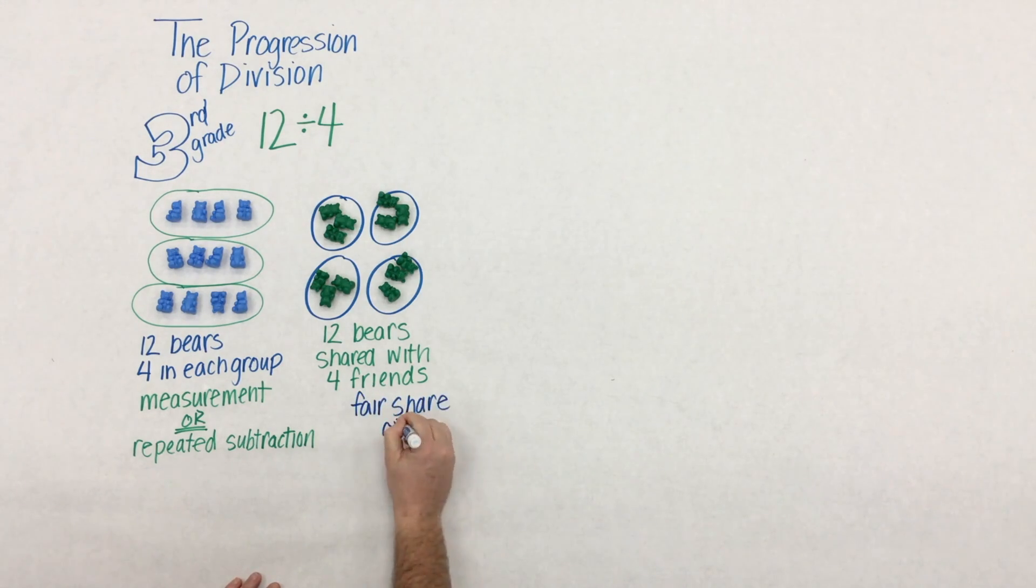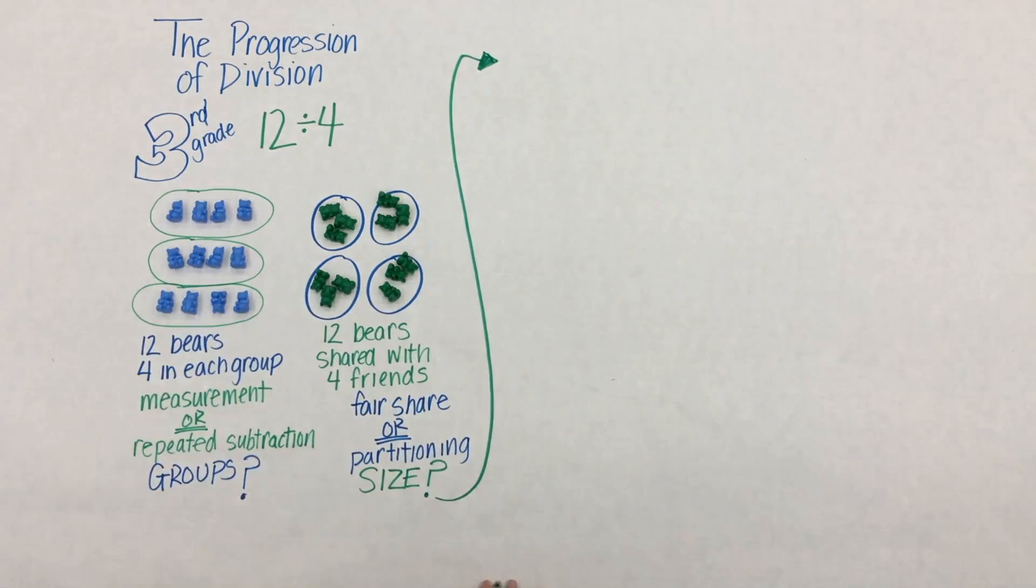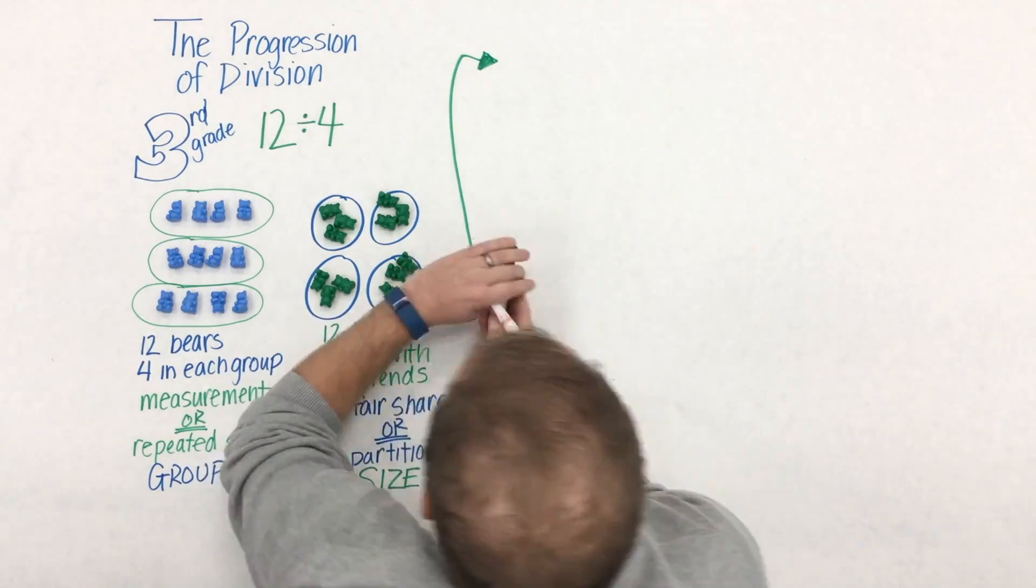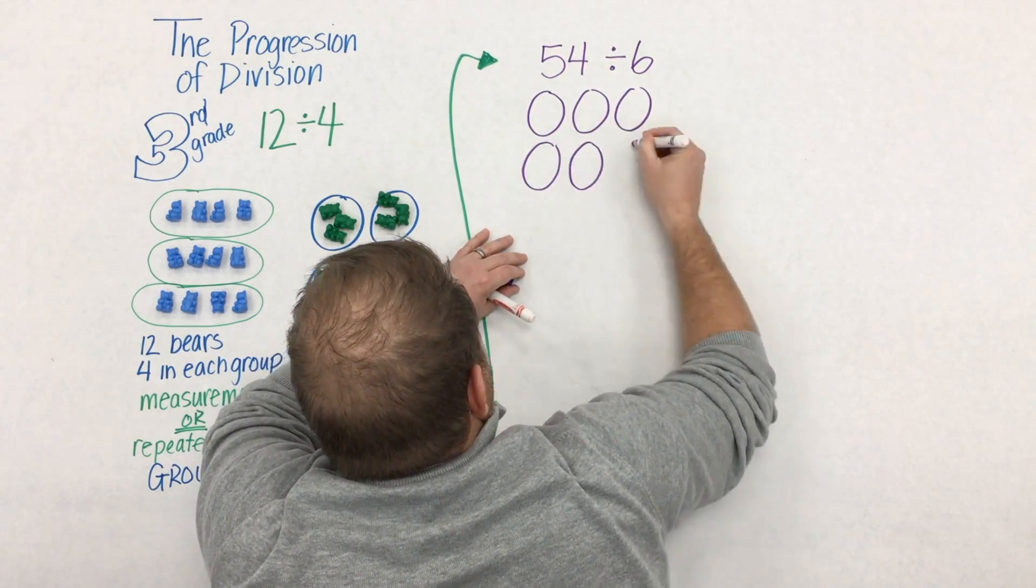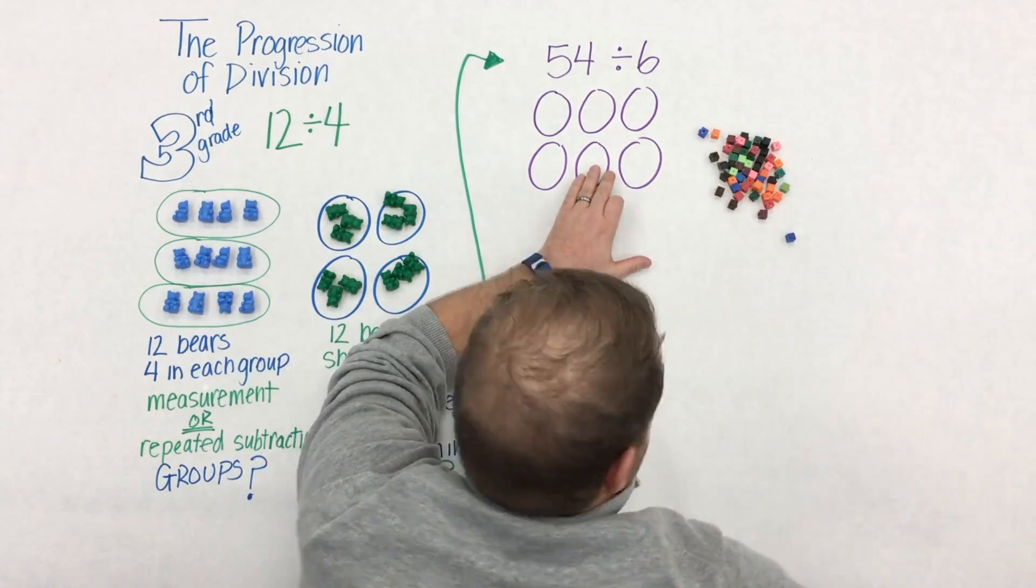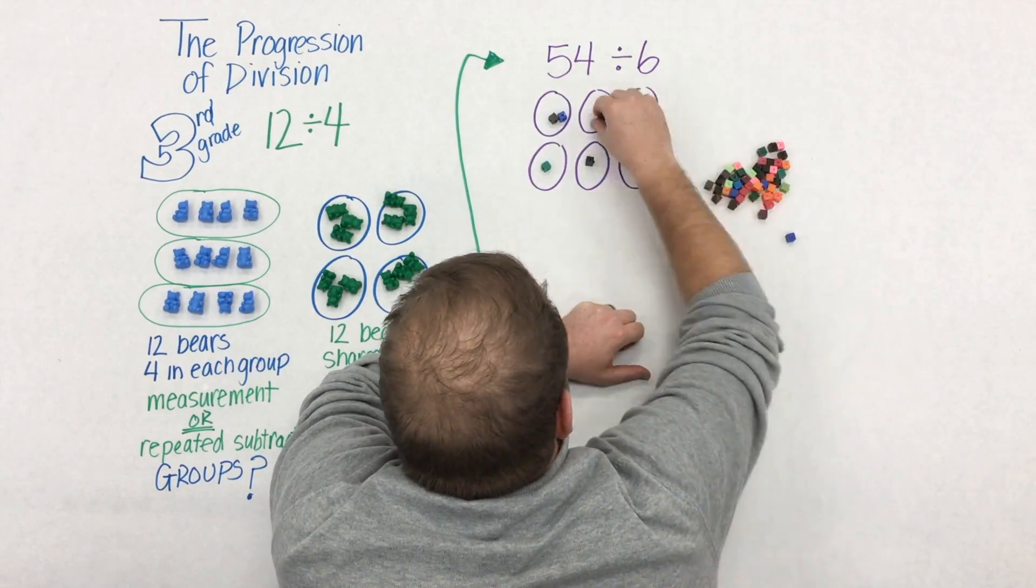One model, that's measurement or repeated subtraction. The other is fair share, which I think we're all pretty familiar with. In one example, we have the group is unknown, and in the other, the size of the group is unknown. As students begin to develop their understanding of division, they probably begin to really rely on this fair share model.